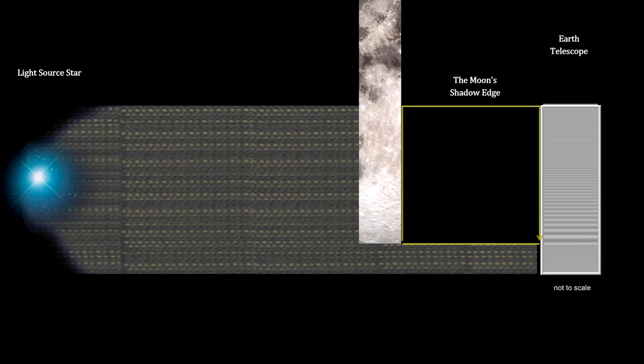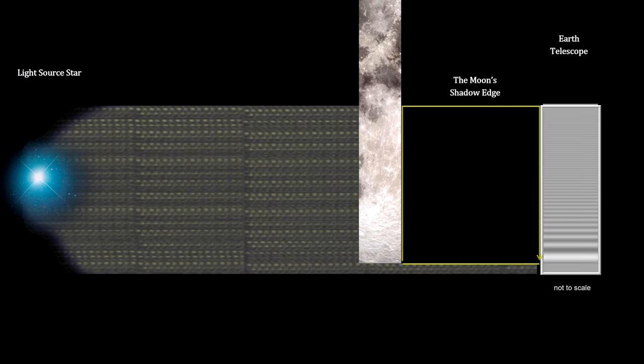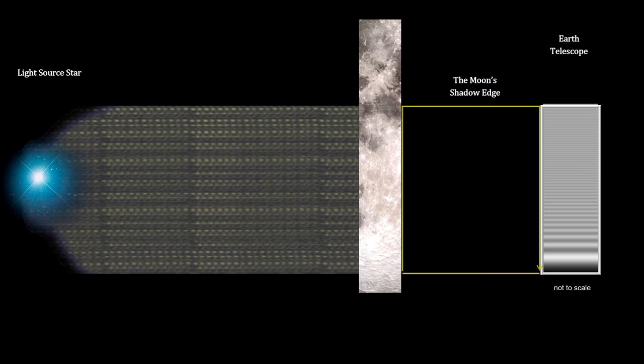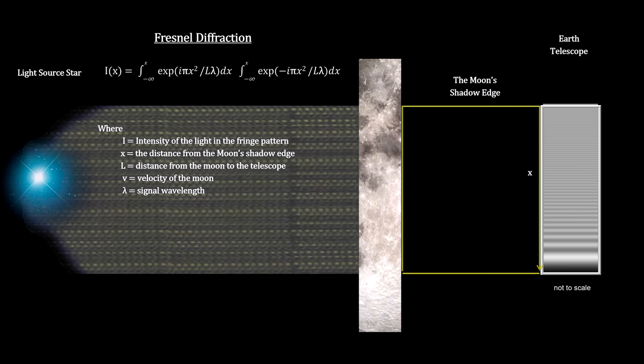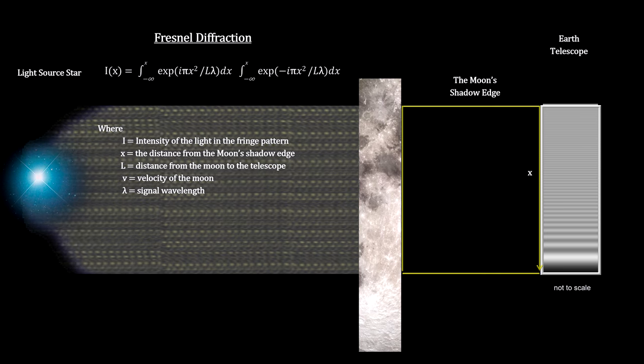A diffraction pattern develops on the radio telescope that provides additional information about the source. The optics are described by the French physicist Augustin Fresnel's equation, developed in the early 1800s.